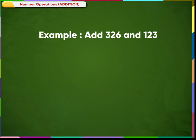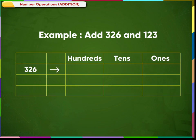Example: add 326 and 123. 326 is equal to three hundreds, two tens and six ones. 123 is equal to one hundred, two tens and three ones. Adding the ones column: six ones plus three ones is equal to nine ones.